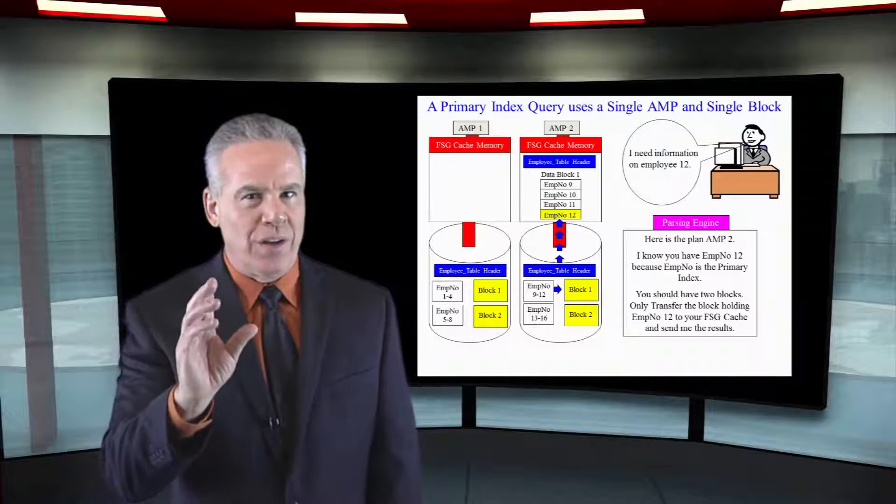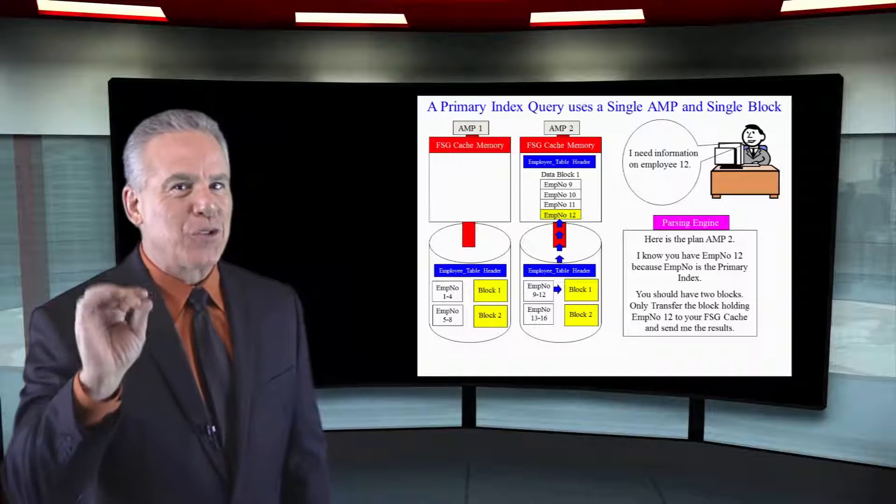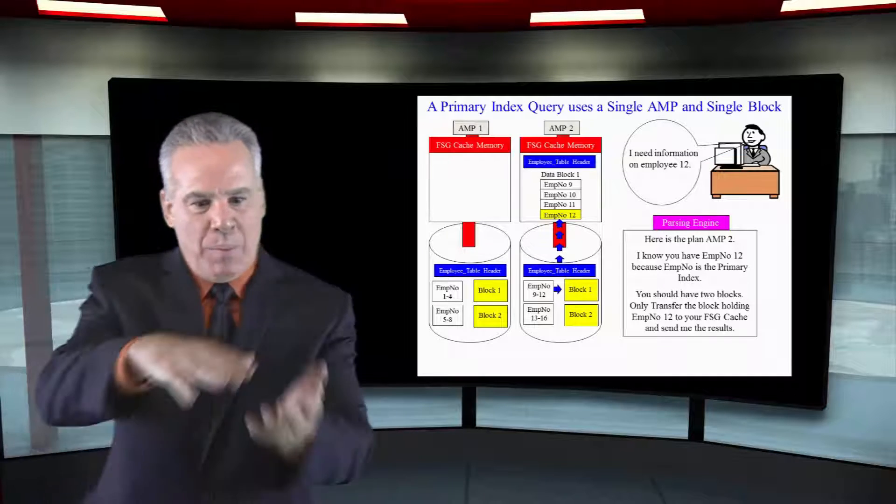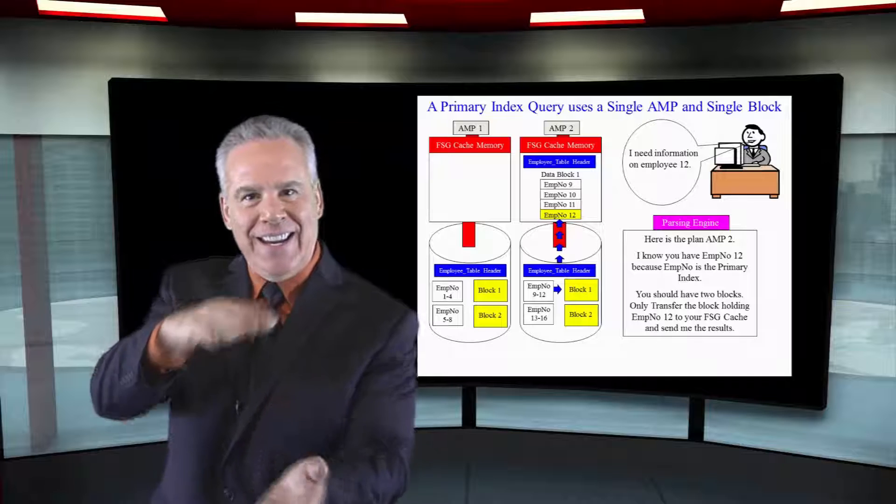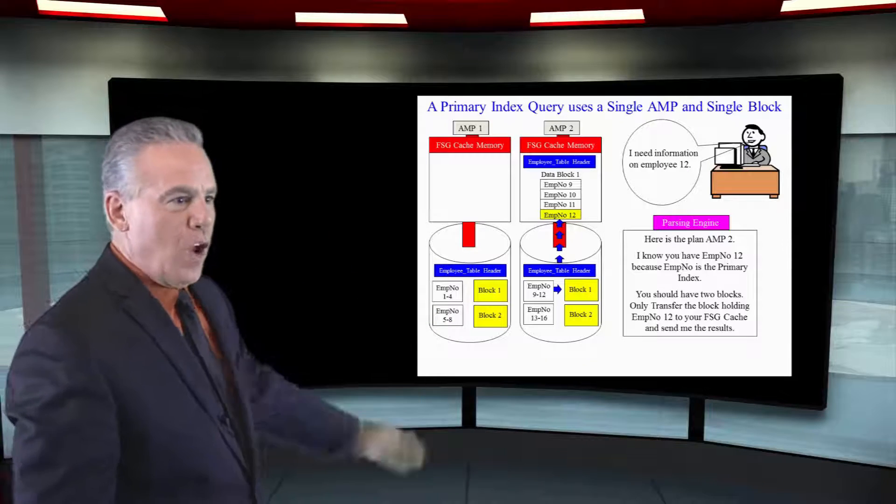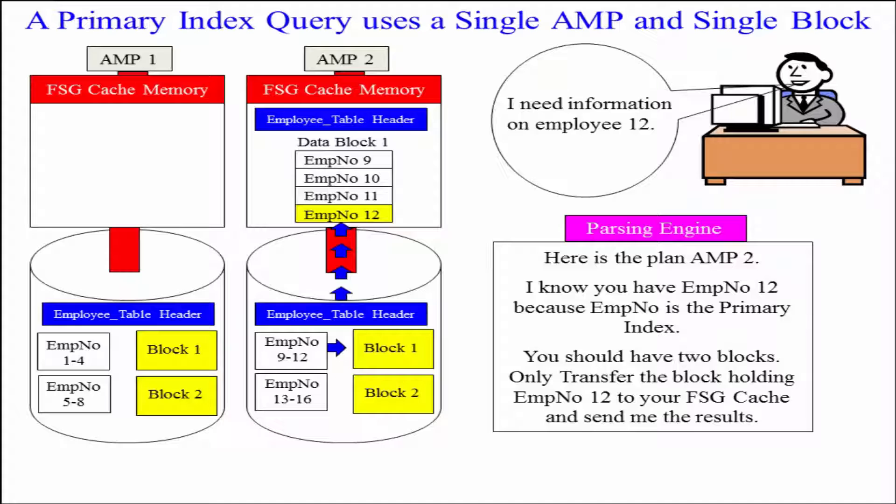What have we learned about how each amp sorts its data? By the row ID. Now take a look at this example. We've got our two amps. They've got their blocks that have gotten so big they had to split those, but these blocks are still sorted by row ID.